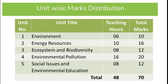Unit 3 is Ecosystem and Biodiversity. Ecosystem can be defined as a natural unit that consists of living and non-living parts which interact to form a stable system. We discuss the concepts of ecosystem as well as biodiversity. 8 hours will be required to complete this chapter and 12 marks are allocated.